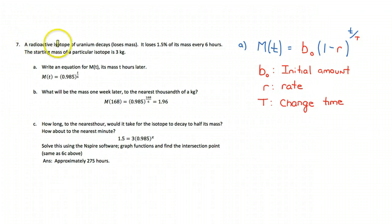So a radioactive isotope of uranium decays. The first thing that jumps out at me is this word decays. It means that this is a decreasing function, meaning that as I put in times that are progressively larger, the amount should decrease.